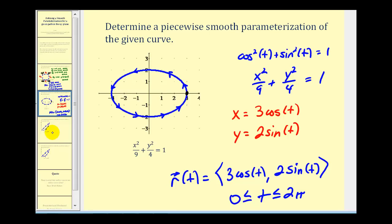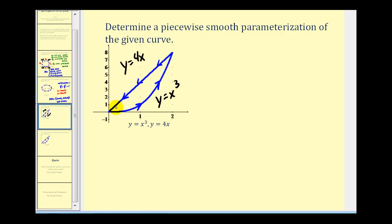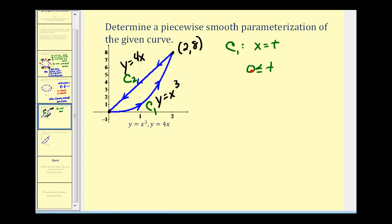For the last example, we have a path that starts at the origin, follows a cubic function out to a point of intersection at (2, 8), and then goes back to the origin along the line y equals four x. This would be curve one and curve two. For curve one, we can let x equal t, so t is on the interval from zero to two, and then if x equals t, y would equal t cubed.